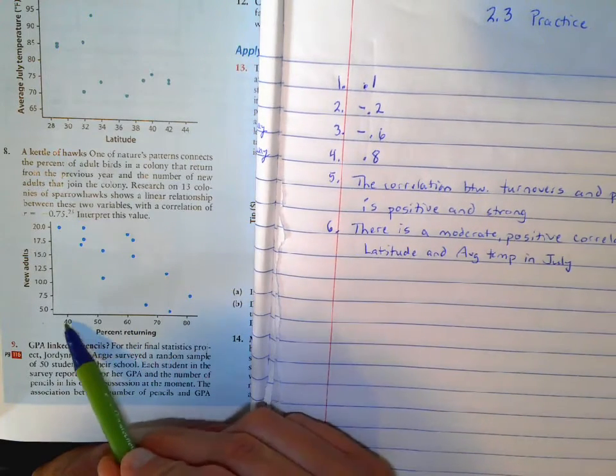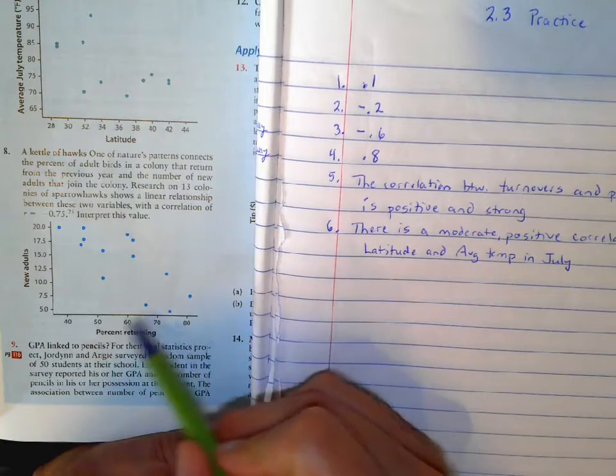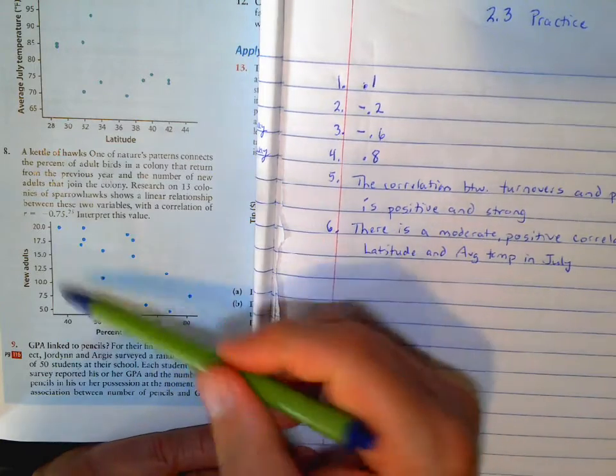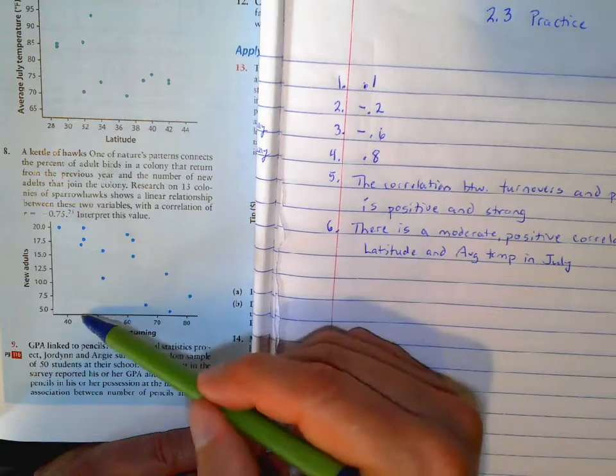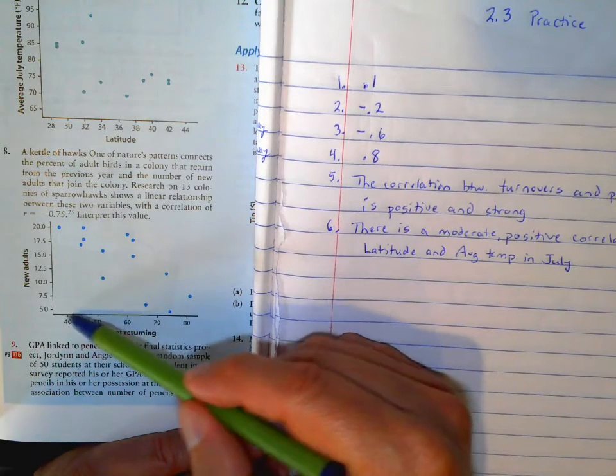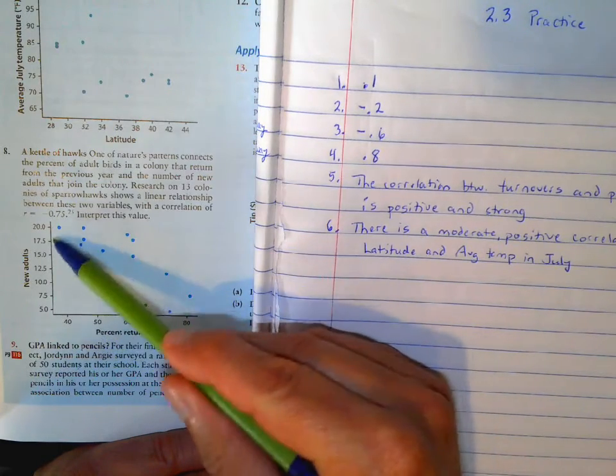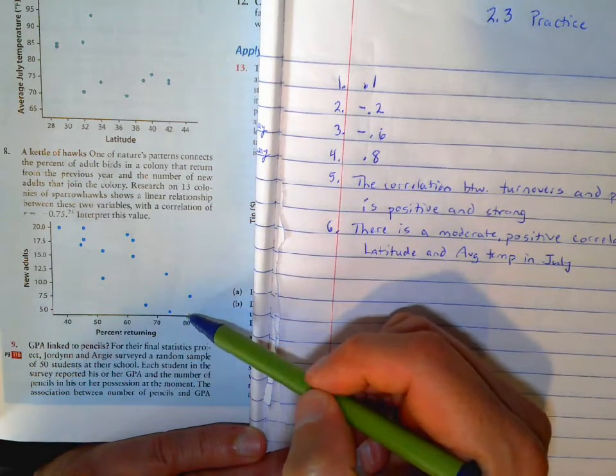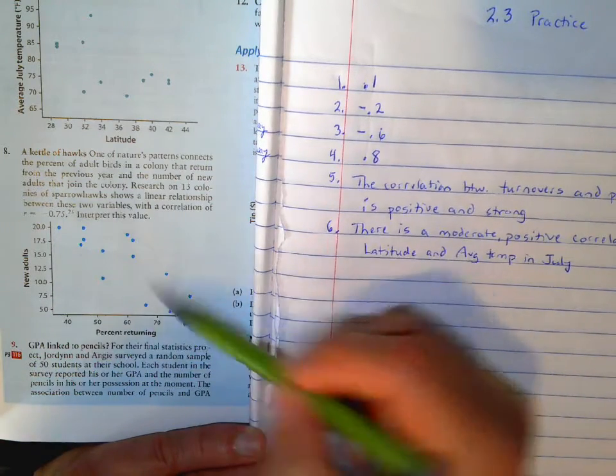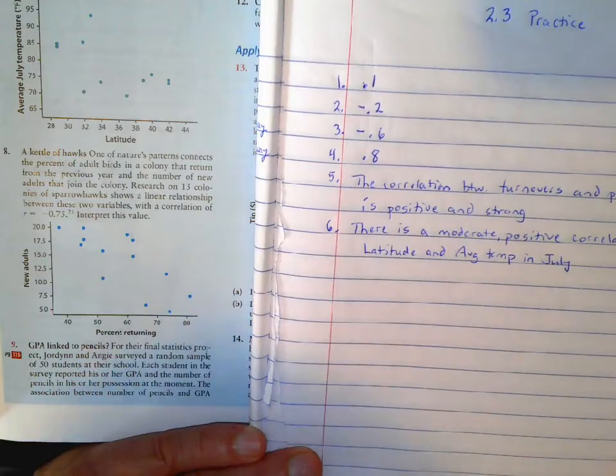So that means as the percent returning increases, there's less people that join. So it kind of stays kind of a constant number, right? So if there's more people leaving, less percent, there's more people coming. And if there's more people returning, we're not people, these are birds. But if there's more birds returning, there'd be less birds that are joining that colony.